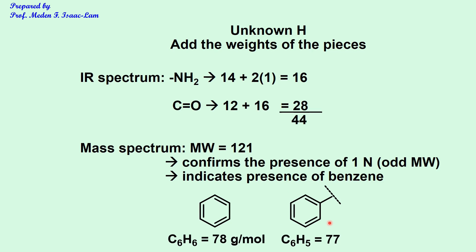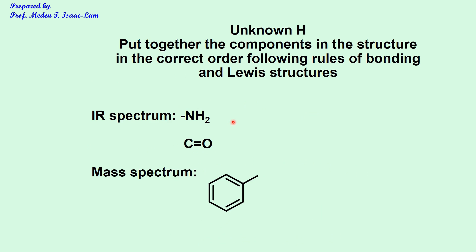Now we have a monosubstituted benzene piece, plus NH2 and C=O. To construct the structure in the correct order, following bonding rules: you cannot put NH2 first and then CO hanging — that will not fit. You put C double bond O first because it needs two bonds: one connects to benzene, and the other connects to NH2.